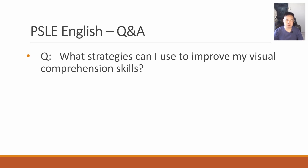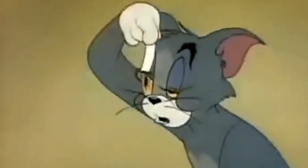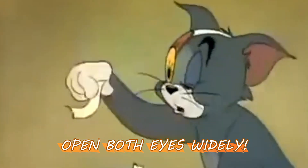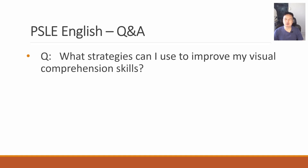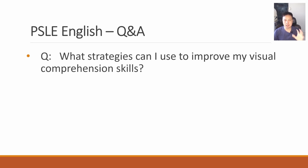What strategies can I use to improve my visual comprehension skills? Just practice a variety of visuals — don't just practice one or two types. Expand your experience and try as many types as possible. This section is not very difficult. For students with stronger language abilities, they can score easily 7 or 8 out of 8. If you're only scoring around 4 out of 8, you need to improve your reading and comprehension skills.